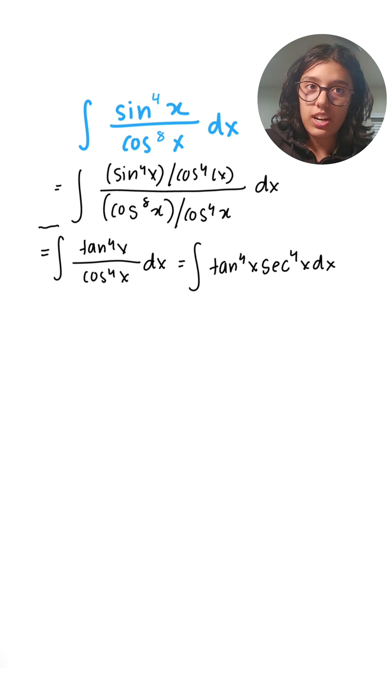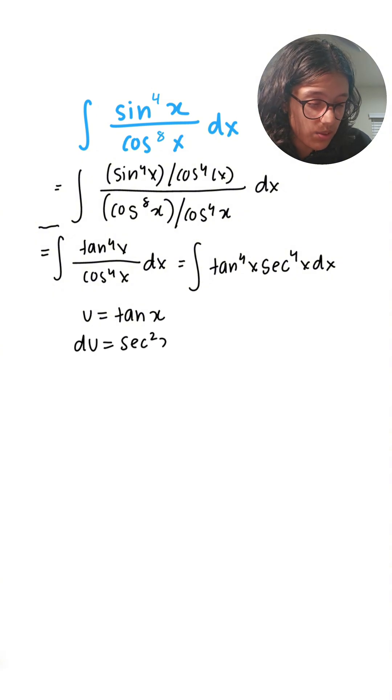I'm going to set u equal to tan x, therefore du is equal to sec²x dx. But of course we don't have a sec²x, we have a sec⁴x.